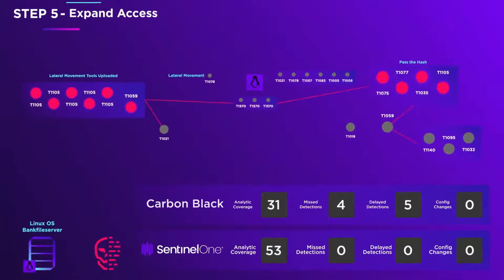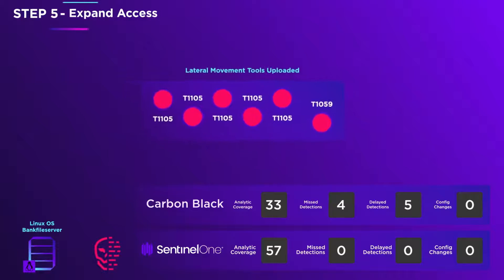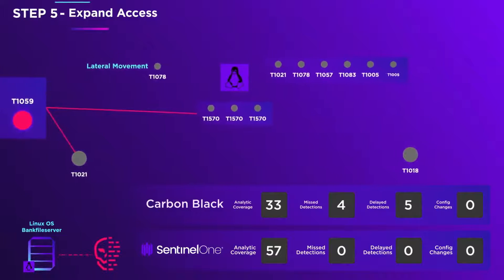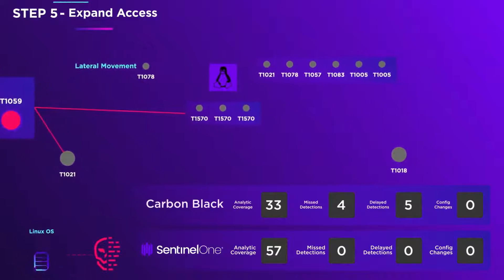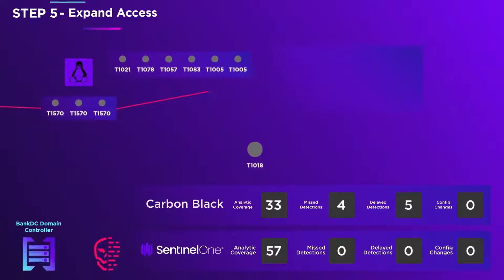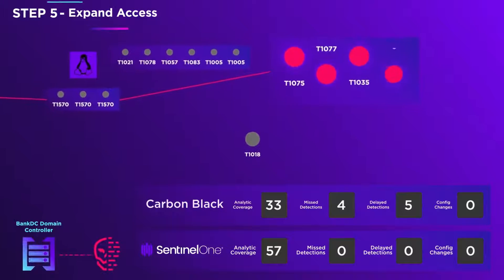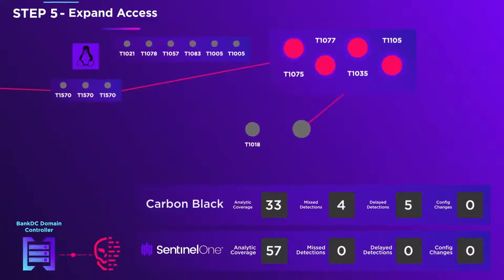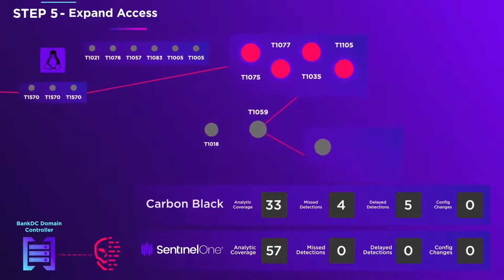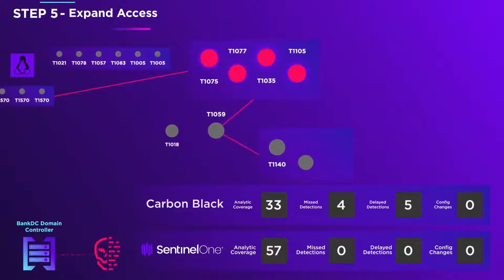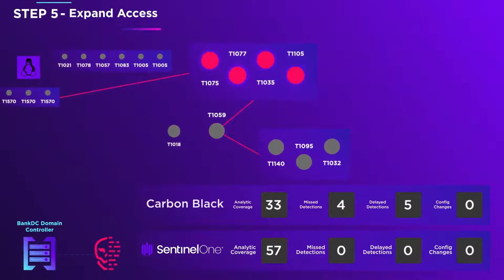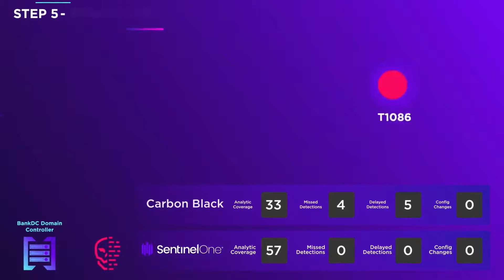Lateral movement now begins. Using the stolen credentials, the adversary moves laterally to the Linux OS bank file server and copies tools onto it. Masquerading as the bank file server, the adversary successfully completes a pass-the-hash attack against the Bank DC Windows domain controller. He is now masquerading as the domain controller, where he spawns shell code that connects back to his C2 server.